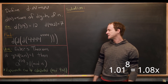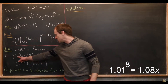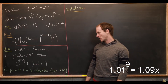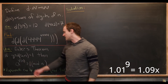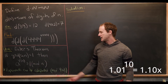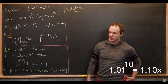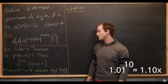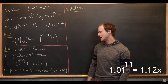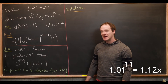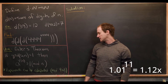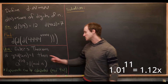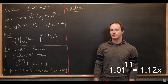Euler's theorem says that if the GCD of a with n is 1 — in other words, they are relatively prime — then a to the phi of n is congruent to 1 mod n, where phi of n is Euler's totient function, which counts the number of numbers between 1 and n that are relatively prime to n. The takeaway is that exponents can be calculated mod phi of n, as long as the base is relatively prime to n.